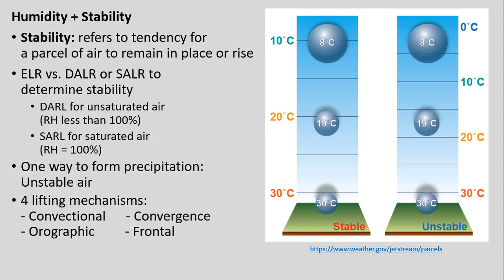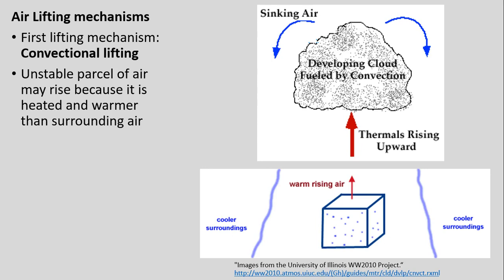We have four lifting mechanisms that can cause air to rise within our atmosphere. The first lifting mechanism is convectional lifting. This is tied to an air parcel being unstable because it has been heated and is essentially warmer than its surrounding air. When you think of an air parcel — defined as what's in the parcel versus what is outside — what is in our box is warmer than its surrounding environment, and because of that it is more buoyant and is going to want to rise.